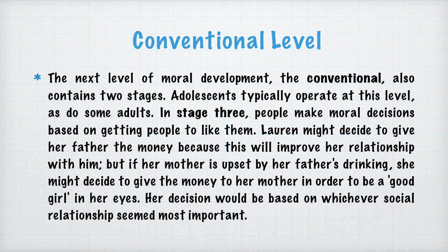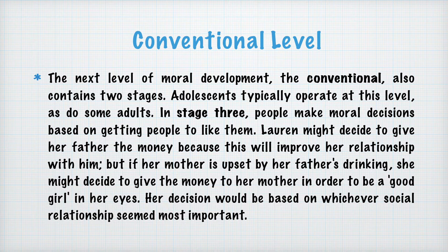The second level is the conventional level. In this level, we also have two stages. The third stage is where children and some adults typically operate. In stage 3, people make moral decisions based on getting people to like them. For example, Lauren might decide to give her father the money because it will improve her relationship with him. But if her mother is upset by her father's drinking, she might give the money to her mother to be a good girl in her eyes. Her decision is based on whichever social relationship seemed most important.